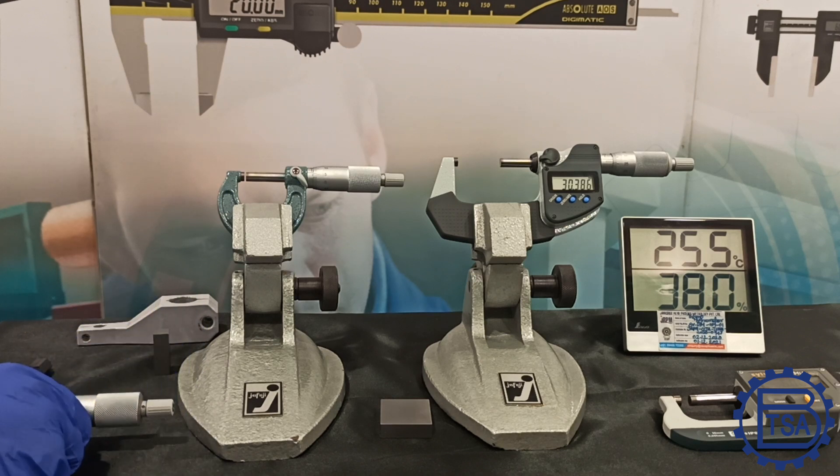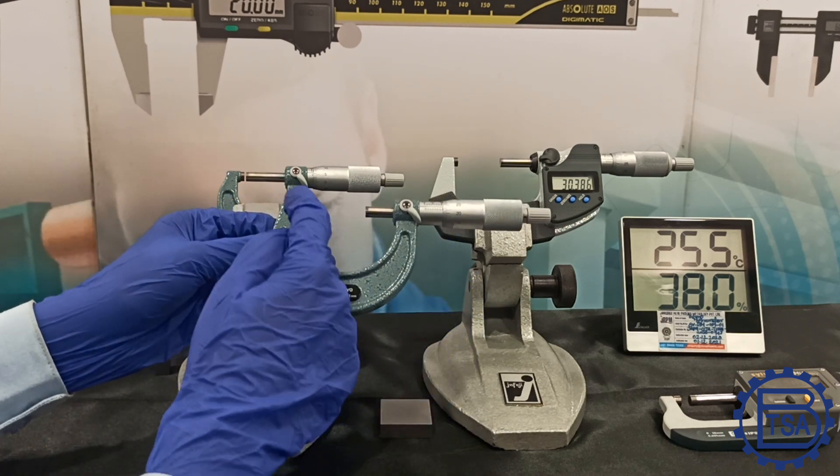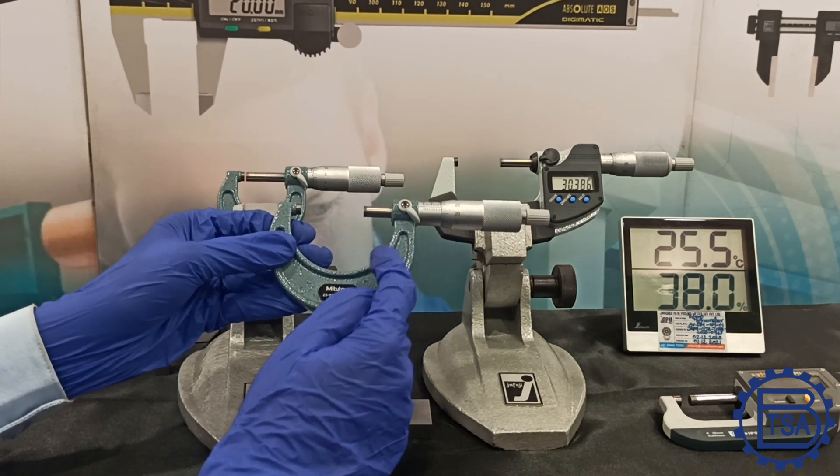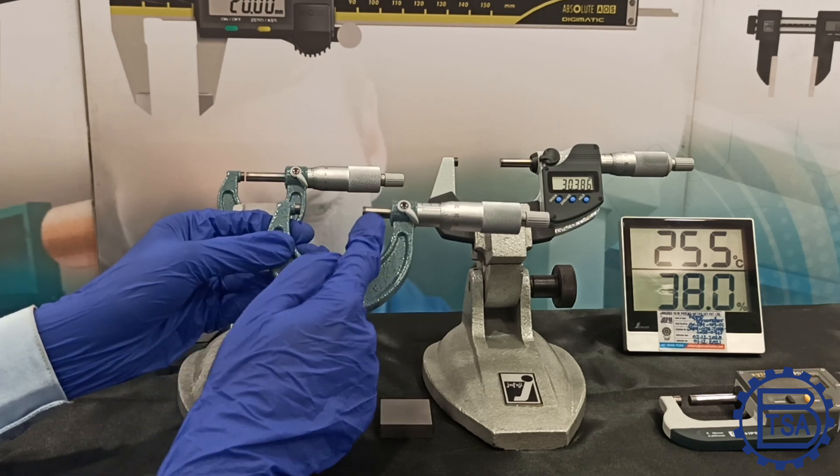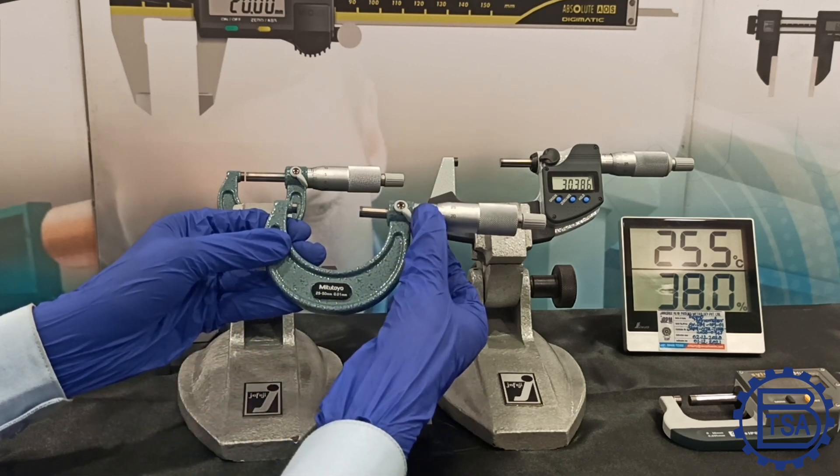Let me explain the parts of the micrometer. This is the frame, the measuring faces, anvil and spindle, sleeve, and thimble.